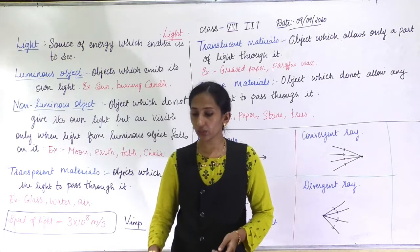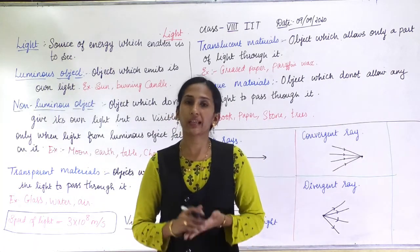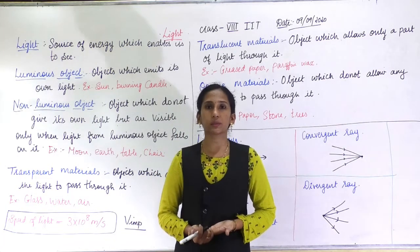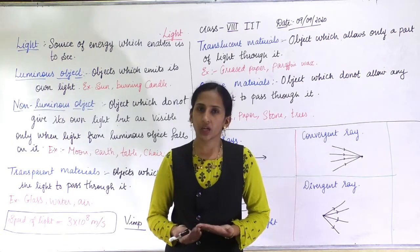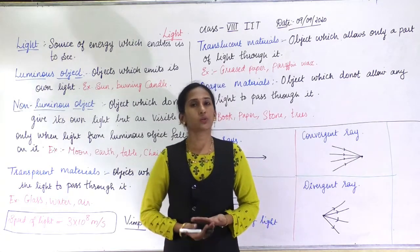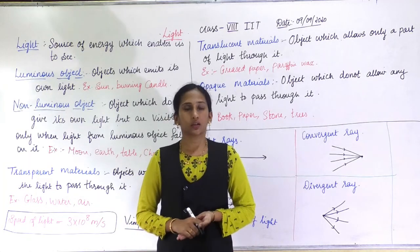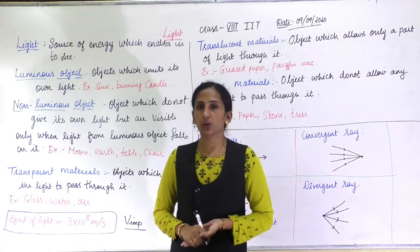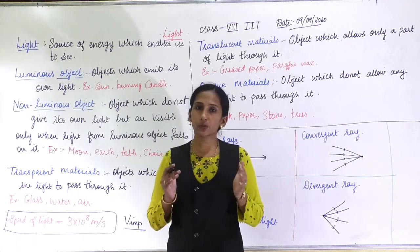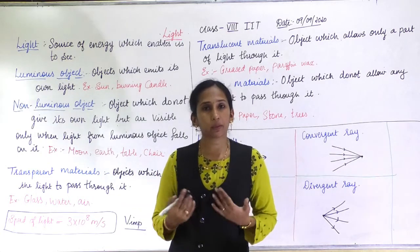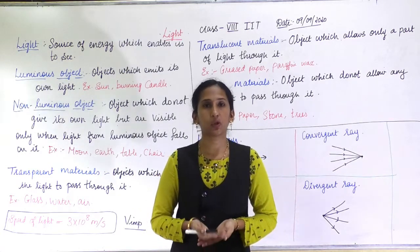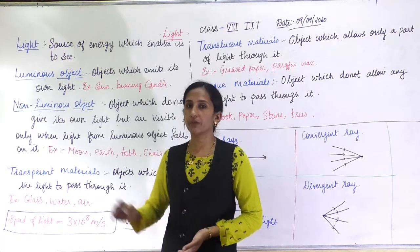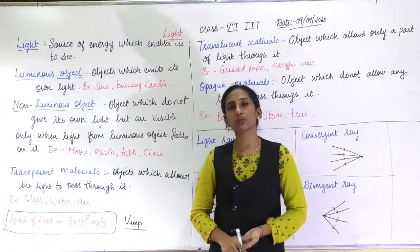Now, what is the definition of light? Light is a source of energy. The biggest source of energy is the sun, which gives us both heat energy and light energy. So the definition of light is: light is a source of energy which enables us to see objects. Because of this energy we can see the objects around us.